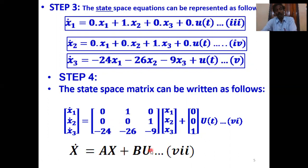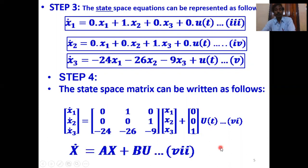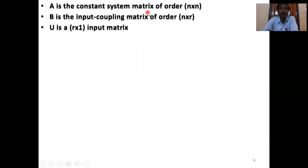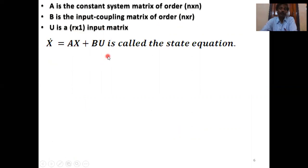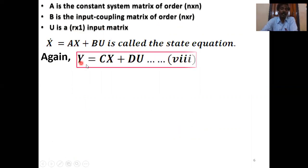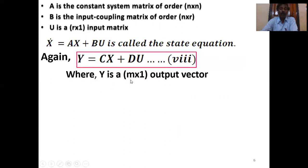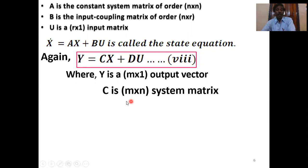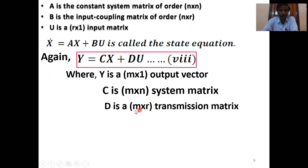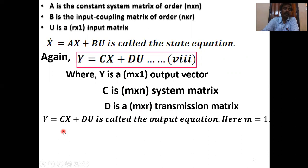This is equivalent to ẋ = Ax + Bu, where A is the constant system matrix of order n×n, B is the input coupling matrix of order n×r, and u is the r×1 input matrix. The equation ẋ = Ax + Bu is called the state equation. Also, y = Cx + Du is called the output equation, where C is an m×n system matrix and D is the m×r transmission matrix.